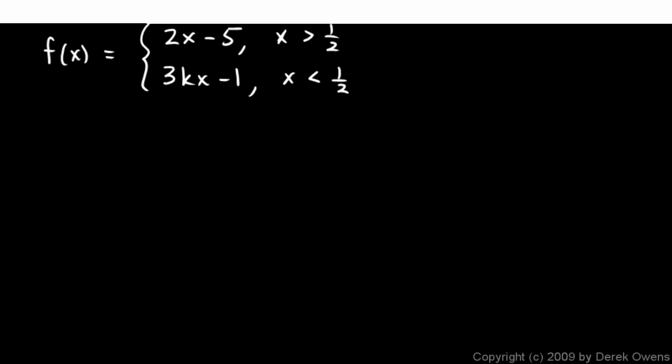Here's another example of a limit problem involving piecewise functions. We're given this function f equals 2x minus 5 if x is greater than 1 half, and 3kx minus 1 if x is less than 1 half.